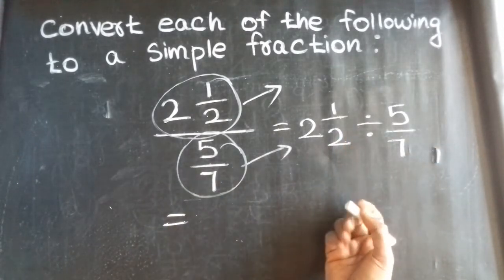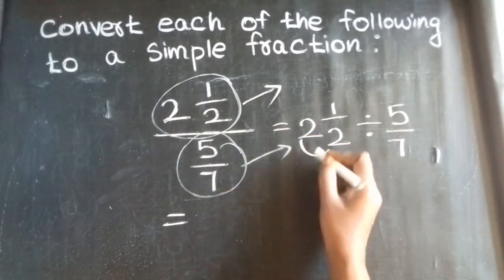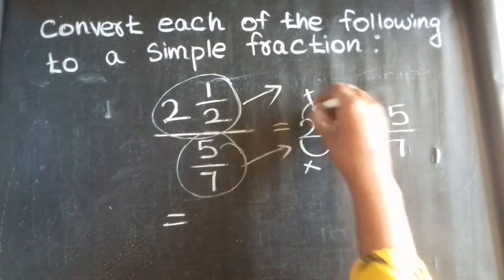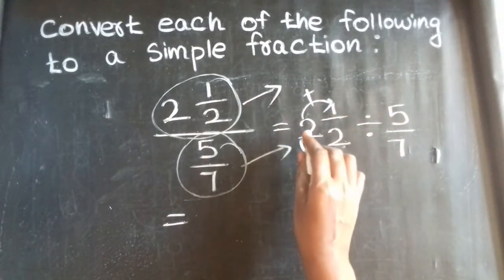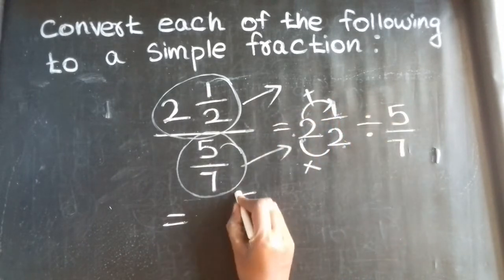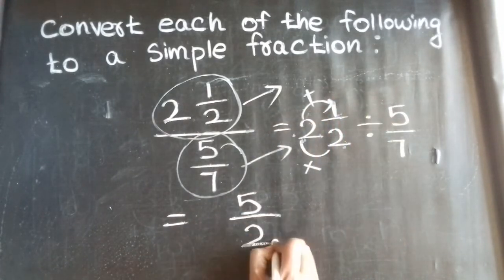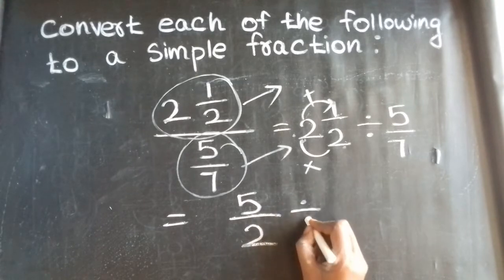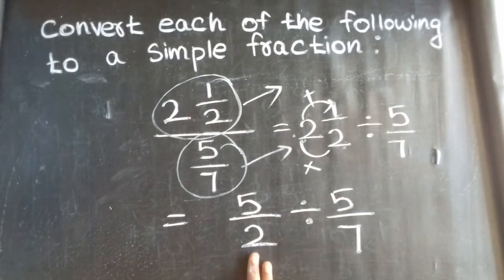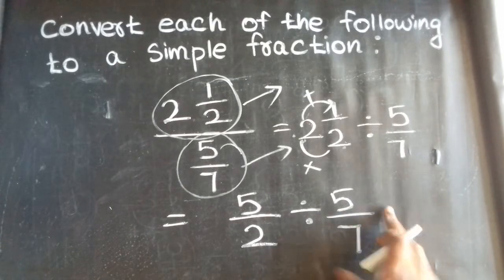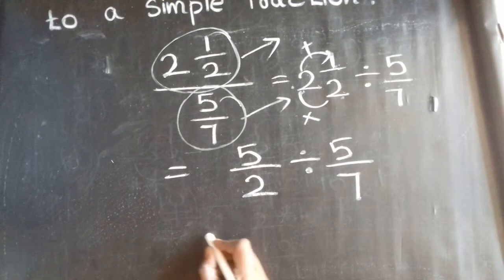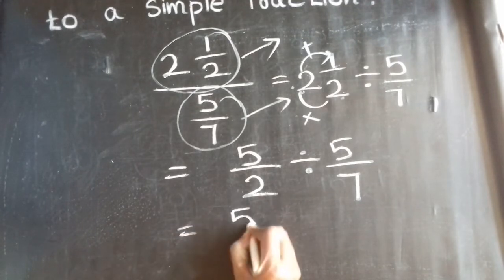Then the mixed number needs to be converted to an improper fraction. Multiply: 2 into 2 is 4, then 4 plus 1 in the numerator equals 5. So we get 5/2. Then place the division sign, then 5/7. So the fraction divides by another fraction. In this condition, we replace the multiplication symbol. The procedure gives us 5/2.